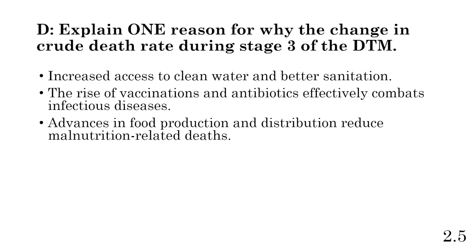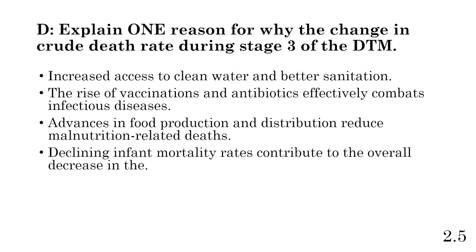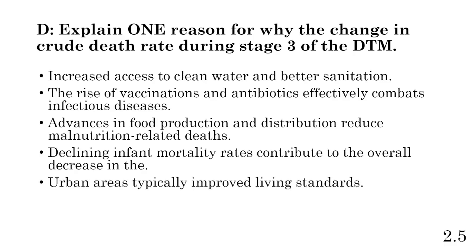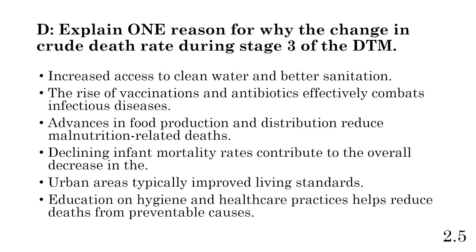Advances in food production and distribution reduce malnutrition — people are not going hungry and starving. Declining infant mortality rates also contribute to the overall decrease in the death rate. Urban areas typically improve living standards, and education on hygiene and healthcare — including reproductive healthcare and gynecology — helps reduce deaths from preventable causes, lowering both maternal and infant mortality rates. We're relating this to the epidemiological transition model, or ETM, which explains health and causes of death within the different stages for countries.